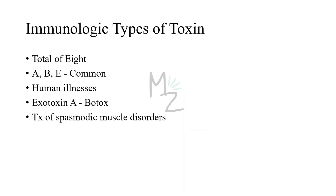There are a total of 8 immunologic types, though some sources cite 7. Types A, B, and E are the most common and are involved in human illnesses. Botox is a commercial preparation of exotoxin A, used to remove wrinkles. Minute amounts of this toxin are also effective in treating certain spasmodic muscle disorders such as writer's cramp.